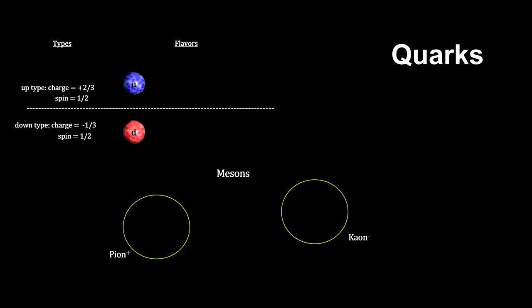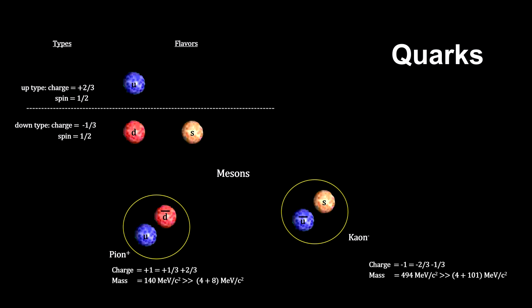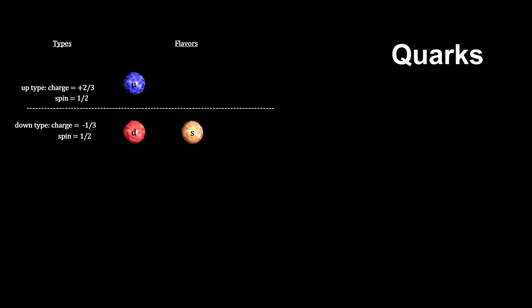The two mesons we've seen are the pion and the kaon. The positively charged pion has an up-quark and an anti-down quark. The negatively charged kaon contains an anti-up quark and a third kind of quark called the strange quark, which was needed to explain the length of time it took the kaon to decay. In addition to the up, down, and strange quarks, we have discovered the charm, top, and bottom quarks, for a total of six.